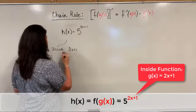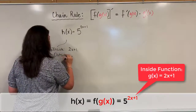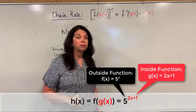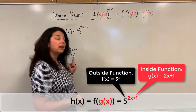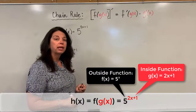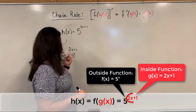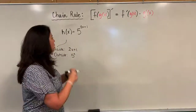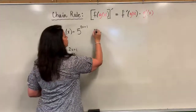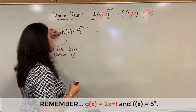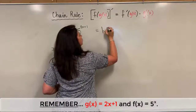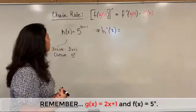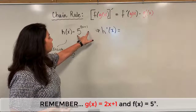The inside function is two x plus one — that's the actual power part. The outside function is the bigger function, the thing that I would put the inside function into. In our case, the outside function would be five to the x, because before composing them I had five to the x, and then I embedded the more complicated inside function of two x plus one into the power of five to the x. So we are trying to take the derivative of h of x, and h prime of x is going to equal the derivative of the outside function per the rule.